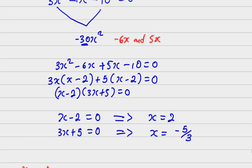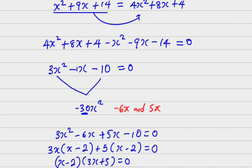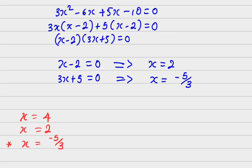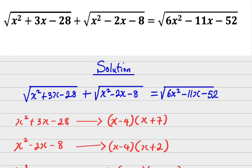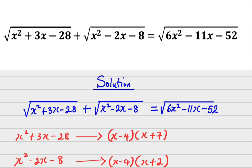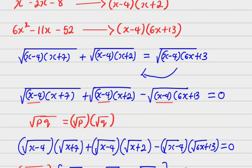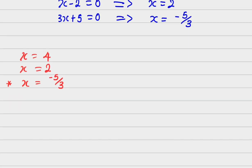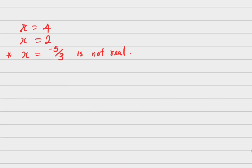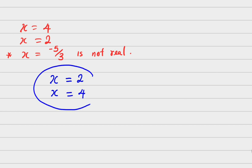The issue is: once you substitute x equals minus 5 over 3 back into the original question, it gives the square root of a negative number. The square root of a negative number is in the complex plane — it is not real. So x equals minus 5 over 3 is rejected, and the real solutions are x equals 2 and x equals 4.